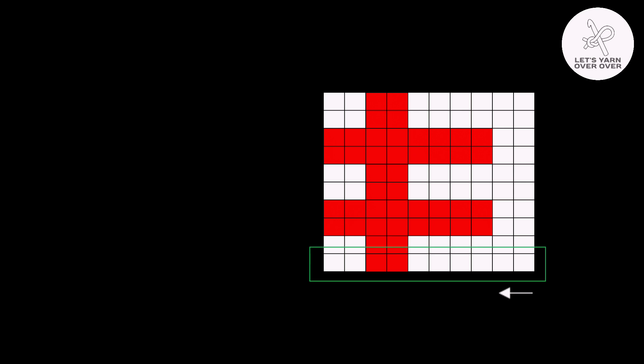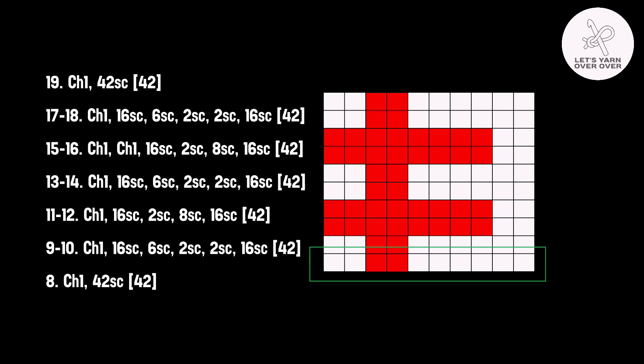I will take 42, which is the current number of stitches, minus 10 stitches, which is the width of the logo, then divide it by 2. The result is 16. So for round 9, I will crochet 16 single crochet in red.